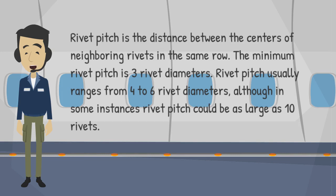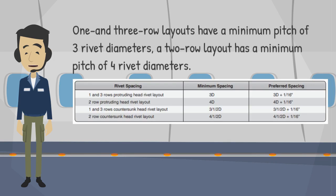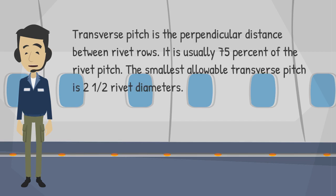Rivet pitch is the distance between the centers of neighboring rivets in the same row. The minimum rivet pitch is 3 rivet diameters. Rivet pitch usually ranges from 4 to 6 rivet diameters, although in some instances rivet pitch could be as large as 10 rivets. Parts subject to bending moments should use closer minimum spacing to prevent buckling of the skin between the rivets. One- and 3-row layouts have a minimum pitch of 3 rivet diameters; a 2-row layout has a minimum pitch of 4 rivet diameters. The pitch for countersunk rivets is 1/16 inch larger than for universal head rivets. Transverse pitch is the perpendicular distance between rivet rows; it is usually 75% of the rivet pitch, with the smallest allowable transverse pitch being 2 and 1/2 rivet diameters.